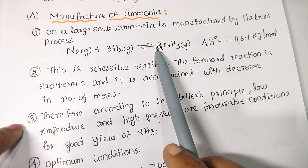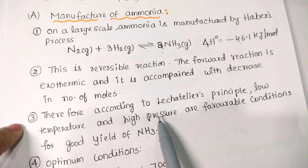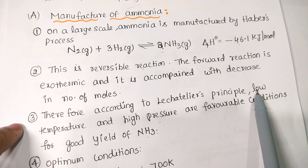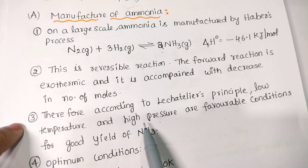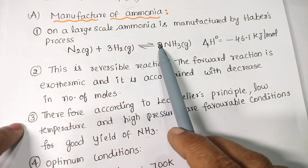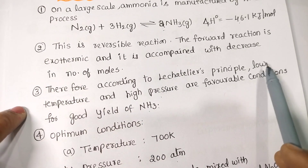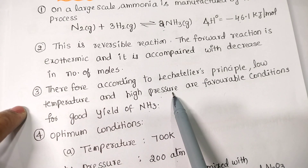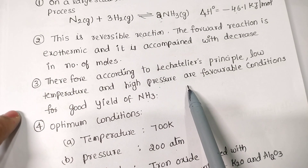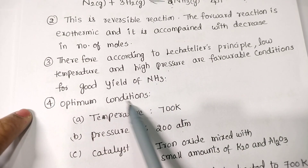The reaction shifts to the decreasing number of moles side, which is the forward reaction, according to Le Chatelier's Principle. Low temperature favors the exothermic forward reaction, making it proceed faster. High pressure applied shifts the reaction toward the side with fewer moles. So the conditions are: low temperature and high pressure, using optimum temperature and optimum pressure.